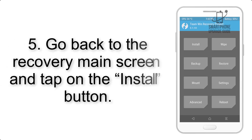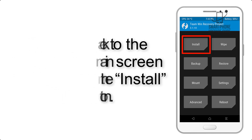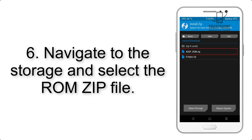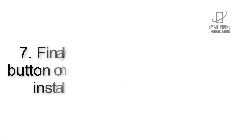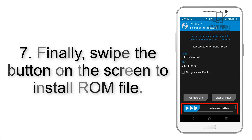Step 4: Swipe the button to wipe the device. Step 5: Go back to the recovery main screen and tap on the Install button. Step 6: Navigate to the storage and select the ROM zip file.